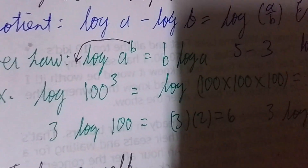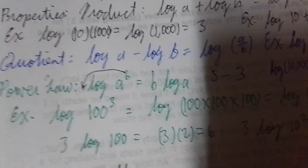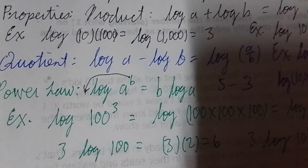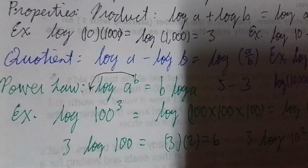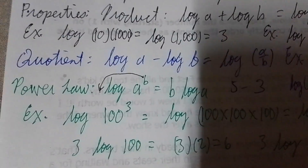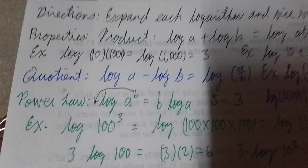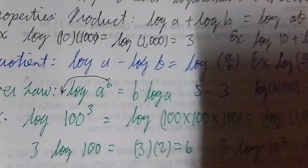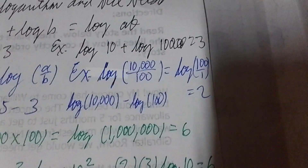For example, we have log of 100 cubed. The 3 slides down, making it 3 times the log of 100. Log of 100 is 2, and 3 times 2 equals 6. Or you can write it in expanded form: log of 100 cubed is log of 100 times 100 times 100, giving log base 10 of 1,000,000, which is 6.